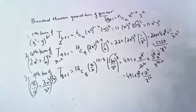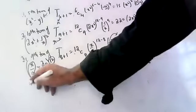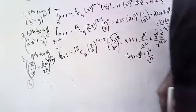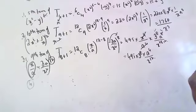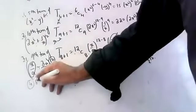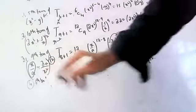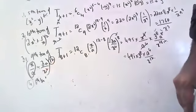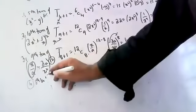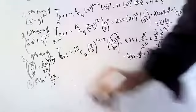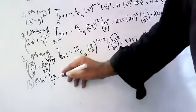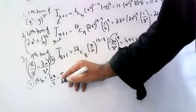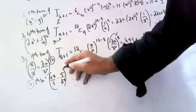Are you able to understand, children? Last one more question. Find the sixth term of (4x/5 - 5/2x)⁹. I want the sixth term.